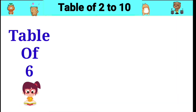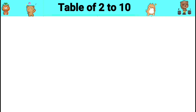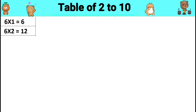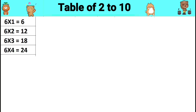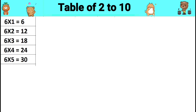Table of six. Six ones are six. Six twos are twelve. Six threes are eighteen. Six fours are twenty-four. Six fives are thirty.